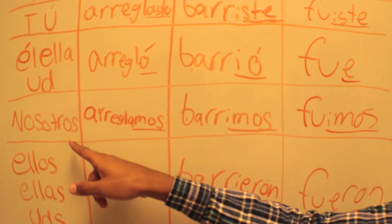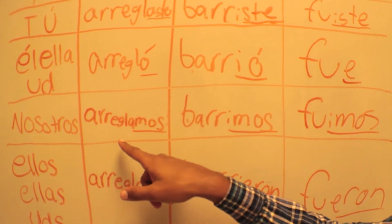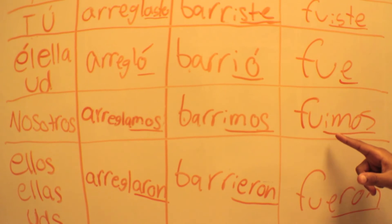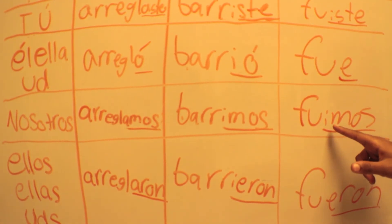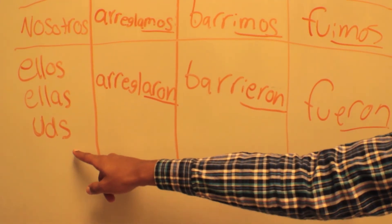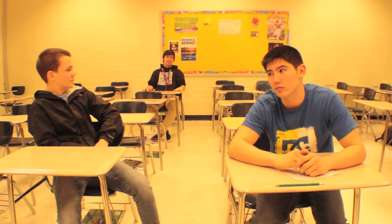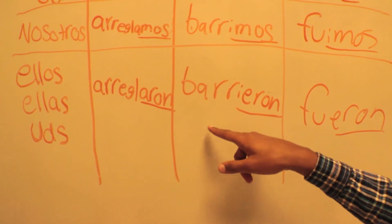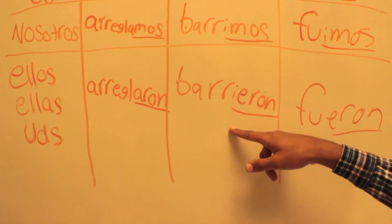For the nosotros form, AR verbs end with AMOS. ER and IR verbs end with EMOS. Irregulars also end in EMOS. For ellos, AR verbs end in ARON. Now I understand, it's easy. ER and IR verbs end in ERON.